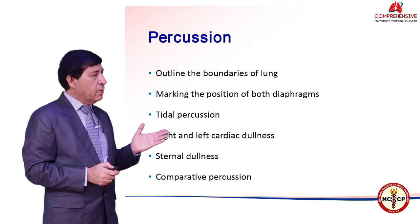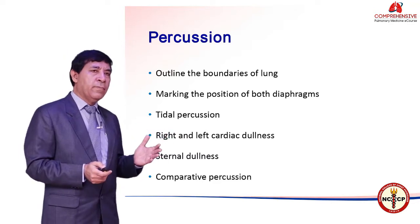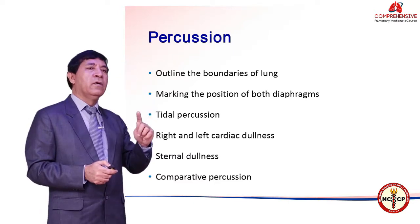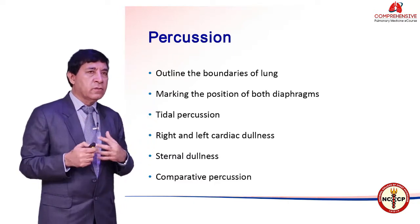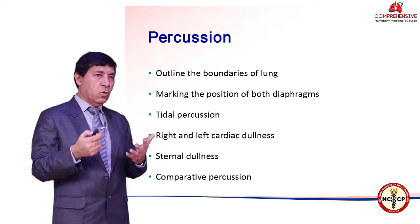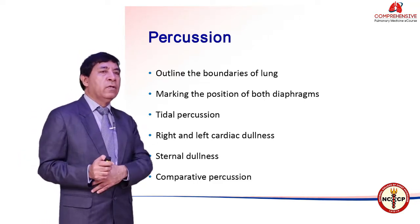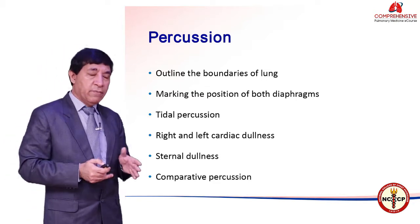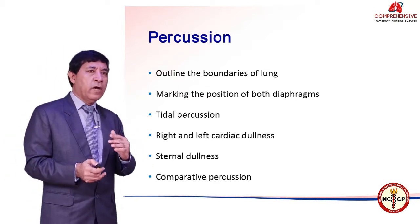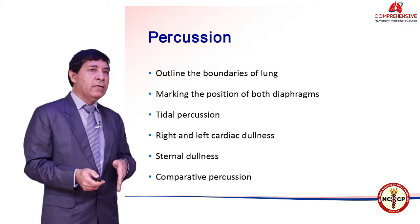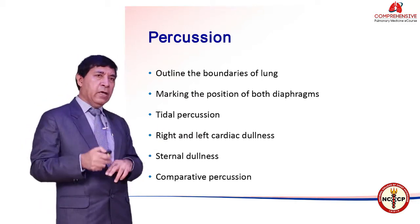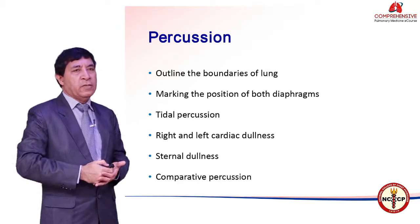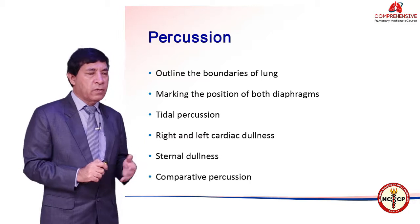When there is an effusion, how do you localize the diaphragm on the right side? On the right side you start percussing from above downward. Because the lung is containing air, the note will be resonant, and the moment you hit a dull note, that will indicate the presence of liver — that is where you mark your diaphragm. Then you tell the patient to take a deep breath, repeat it, and if you find the dullness has moved downwards by one space, that indicates a tidal percussion.